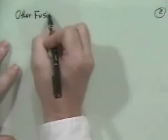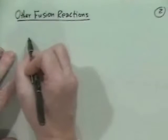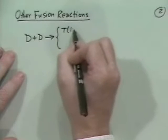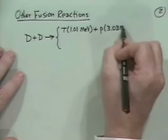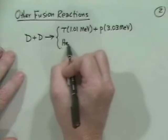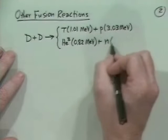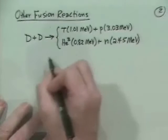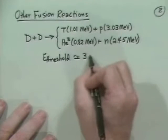There are other fusion reactions. The DT reaction is the easiest and first, but you can imagine DD reactions by themselves, which go with roughly equal probability to either a triton with 1.01 MeV plus a proton — all charged particles — or with 50-50 probability to helium-3 at 0.82 MeV plus a neutron with 2.45 MeV. These DD reactions have a threshold energy to overcome the Coulomb barrier of about 35 kilo electron volts.